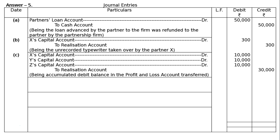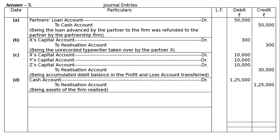Part D: Assets of the firm realized rupees 1,25,000. Cash account debited rupees 1,25,000 to realization account rupees 1,25,000, being assets of the firm realized.